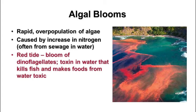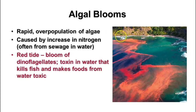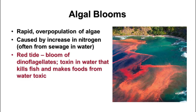A red tide is a special kind of bloom — a bloom of dinoflagellates. The dinoflagellates give off a toxin in the water that can kill fish and make seafood toxic. They can also be harmful to you if you're in the water. If you're in a fishing village and see a red tide coming, your fishing income is at risk, and even if fish wash on shore, you can't eat or sell them because they're harmful.